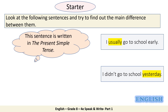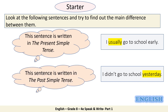As you see, in the first sentence we note that it's written in the present simple tense — I usually go. In the second sentence, the tense is past simple. It's written in past simple tense — I didn't go to school yesterday. The main difference is that the first sentence is written in present and the second one is in past.